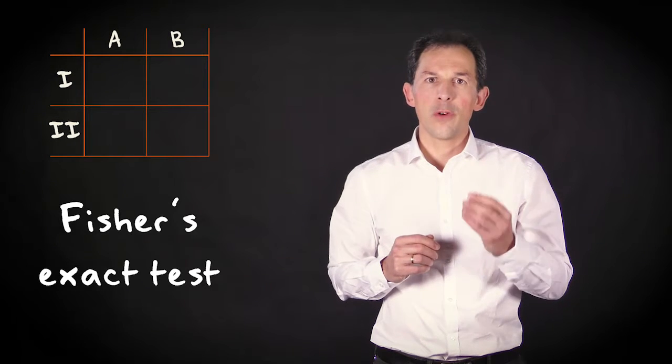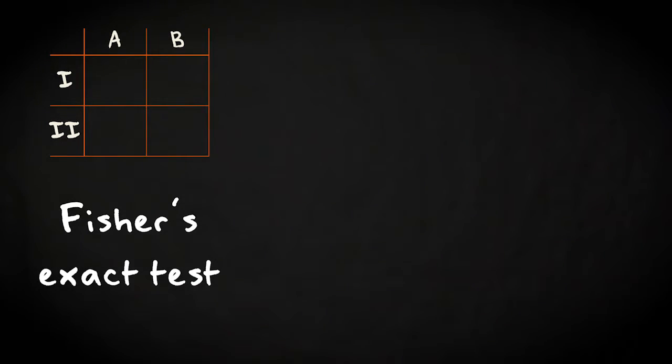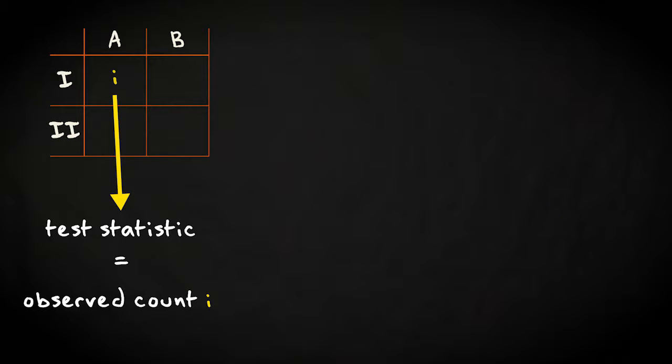In this video, I'll explain how it works. Fisher's Exact Test takes the count in a single cell as test statistic. And you can then formulate the null hypothesis that this observed count is equal to its expected count versus the alternative that it's unequal.